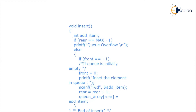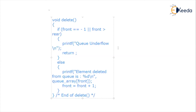For the deletion operation in the queue using array, we first check if front equals -1 or if front is greater than rear — both indicating the queue is empty (queue underflow). Otherwise, we delete the element at queue[front]. Since deletion happens at the front, we increment front, moving it closer to rear. We delete and serve each element one by one until we reach the rear position.